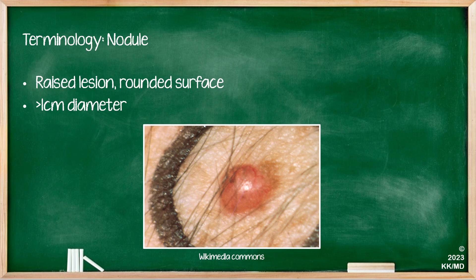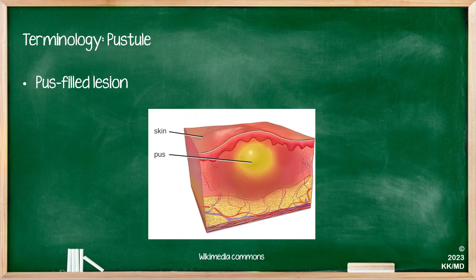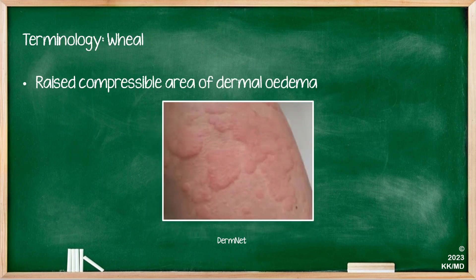A nodule is a raised lesion with rounded surfaces and it needs to be more than one centimetre in diameter. A vesicle is a fluid-filled blister less than one centimetre in diameter. A bulla is also a fluid-filled blister, however this is more than one centimetre in diameter. A pustule is a pus-filled lesion. Wheals are raised compressible areas of dermal oedema, and you would very frequently see these in conditions such as allergic reactions.